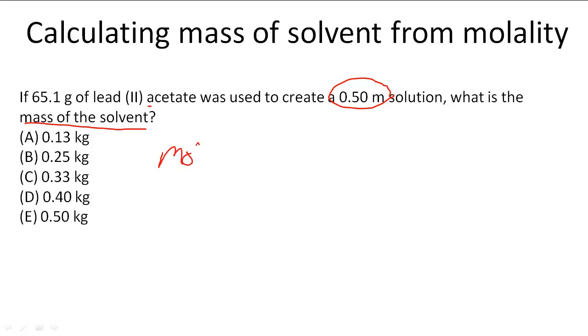Molality is calculated by dividing moles of solute by kilograms of solvent. We can figure out the moles of the solute, and since we're given the molality of the solution, we can determine the kilograms.